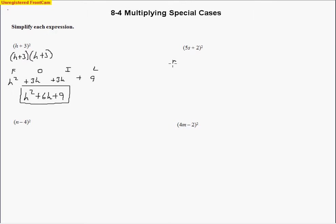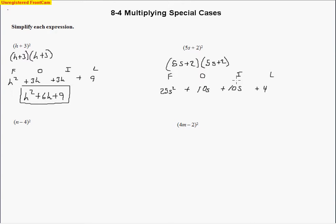Same thing here — we write it out twice: 5s plus 2 multiplied by another 5s plus 2. Multiplying the first terms gives 25s squared. Outside terms: 5s times 2 makes 10s. Inside terms are the same — 2 times 5s makes another 10s. Last terms: 2 times 2 makes 4. Notice how the outside and inside terms are the same again because we have the same numbers being multiplied. So our final answer is 25s squared plus 20s plus 4.